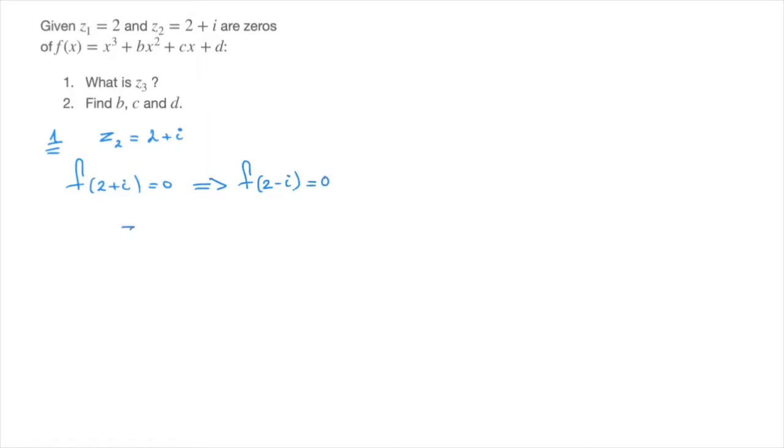So we can go ahead and state that z3, the third zero, must equal 2 minus i. And that's the answer to the first question.